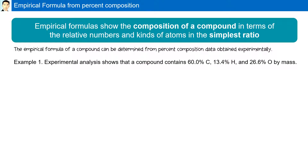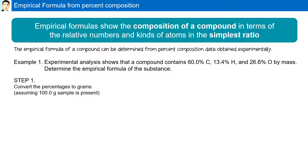For example, experimental analysis shows that a compound contains 60% carbon, 13.4% hydrogen, and 26.6% oxygen by mass. We must determine the empirical formula of the substance. The first step is to convert the percentages to grams, assuming a 100-gram sample.